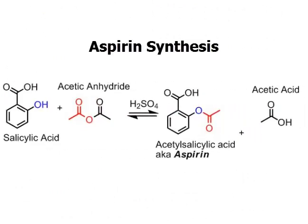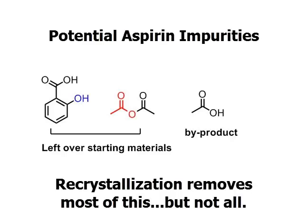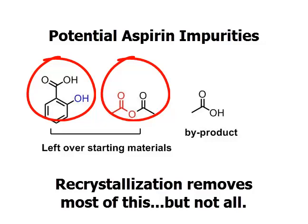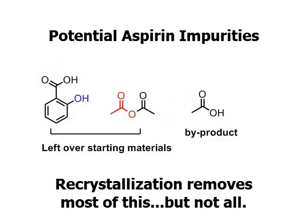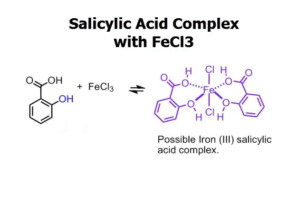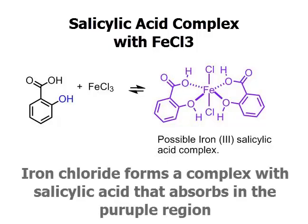In the aspirin synthesis, salicylic acid reacts with acetic anhydride using sulfuric acid as a catalyst to produce aspirin, with acetic acid as a byproduct. Some potential impurities that can show up include salicylic acid, acetic anhydride, and leftover acetic acid. By adding iron chloride we're able to detect any leftover salicylic acid — the solution will turn purple, and how deep the purple color is tells us how much salicylic acid is actually left over.